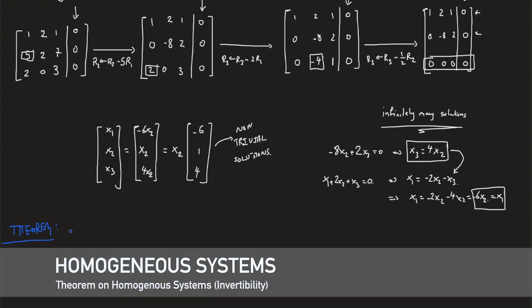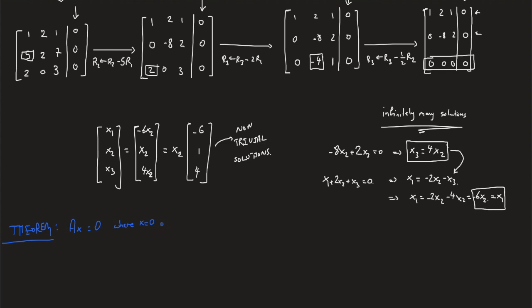If we have a homogeneous system Ax equals 0, where x equals 0 is the only solution, hence the trivial solution is the only solution, this means that A is invertible and the inverse of A exists. This theorem also gives us the following: If the inverse of A does not exist, this means Ax equals 0 admits non-trivial solutions, as is the case in the above example. Since we obtained a non-trivial solution, the initial matrix A is not invertible.